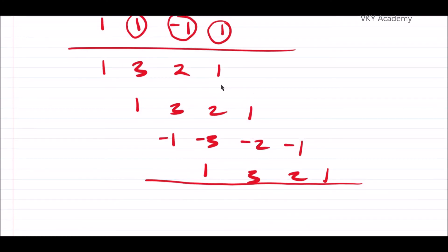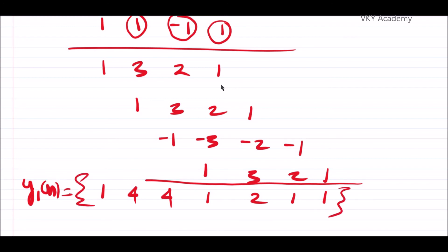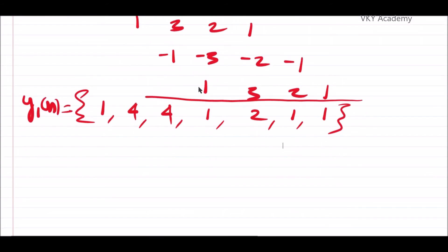Now we perform the column-wise addition of these shifted rows. The result is: 1, then 1+3=4, then 3+1+(-1)... working through all columns gives y1[n] = {1, 4, 4, 1, 2, 1, 1}, with 7 samples total as expected from the linear convolution length rule (4 + 4 - 1 = 7).